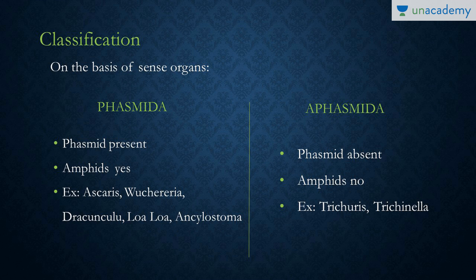In Aphasmida, the phasmid is absent. Similarly, amphids are present in Phasmida and absent in Aphasmida. Examples in Phasmida include Ascaris, Wuchereria, Dracunculus, Loa loa, and Ancylostoma, while Aphasmida includes Trichuris and Trichinella.